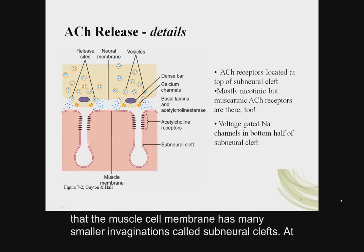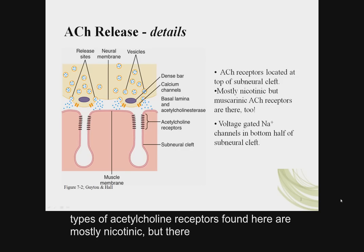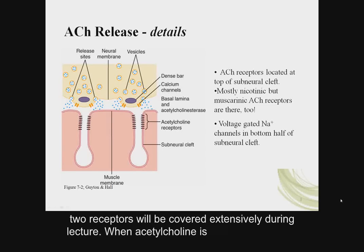The muscle cell membrane has many smaller invaginations called subneural clefts. At the top of the subneural cleft, you would find acetylcholine receptors. The types of acetylcholine receptors found here are mostly nicotinic, but there are a few muscarinic acetylcholine receptors too. The difference between these two receptors will be covered extensively during lecture.